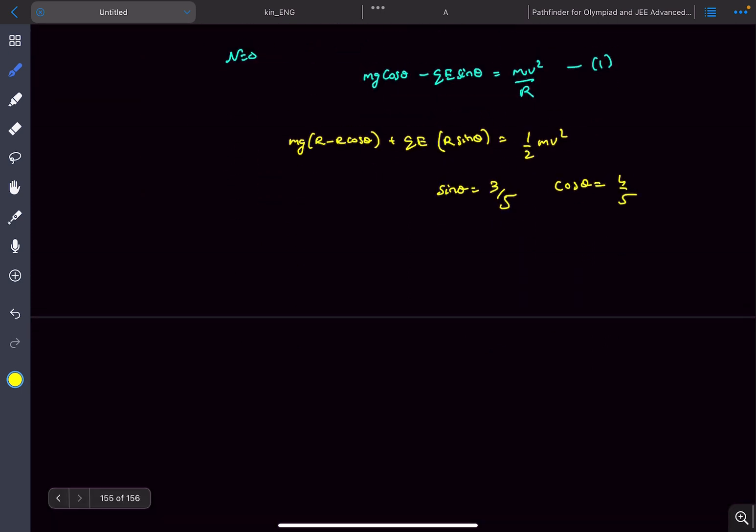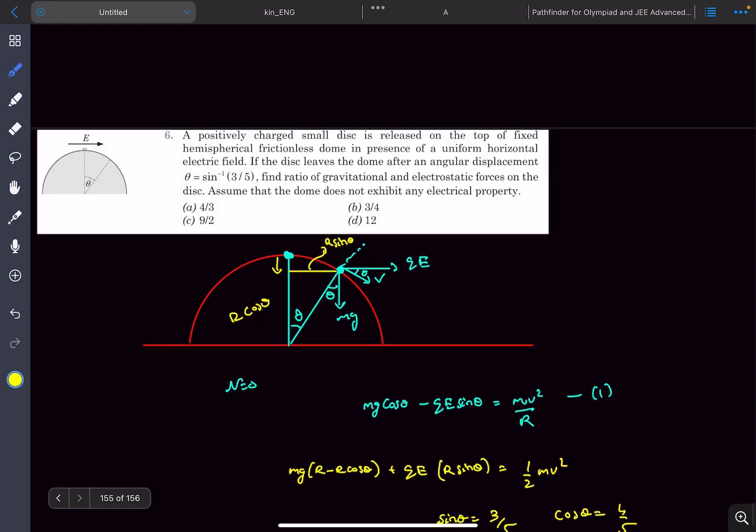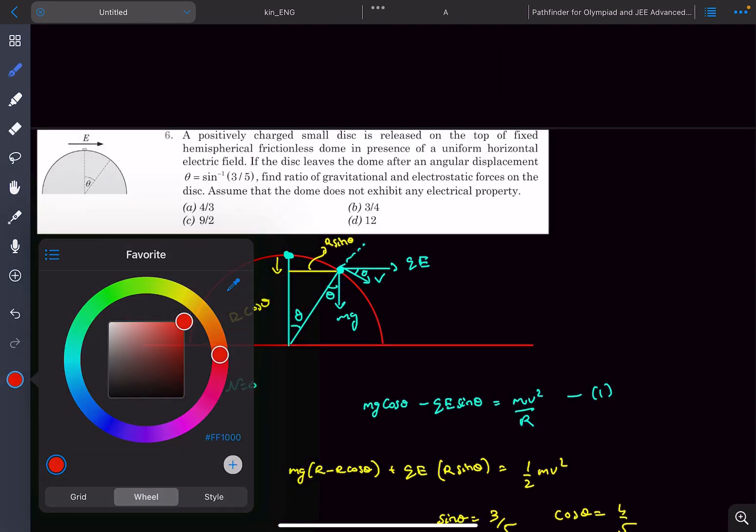Now the value of sin theta is given to us to be three by five. Now substituting all the values into this and eliminating V. So we had to find the ratio of the gravitational force to the electrostatic force. So that would be mg divided by QE, which would be nine by, so our answer would be option number C.